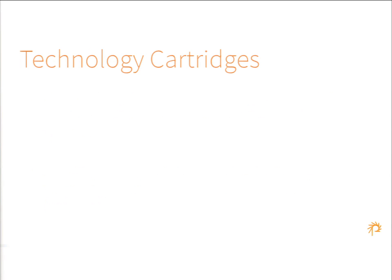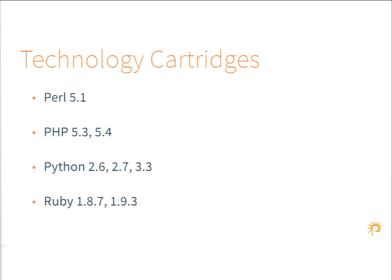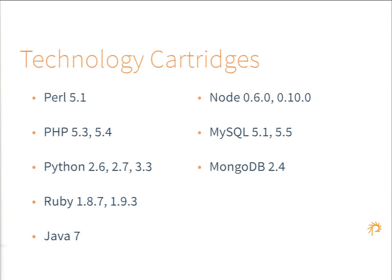We do have a small PressFlow settings helper that uses the part of PressFlow 7 which can read anything in $conf or $databases from the environment, so you don't have to edit your settings.php at all and your code will just work on OpenShift. The built-in technology cartridges come whether you're using OpenShift Online, Enterprise, or Origin. You can run Perl apps, PHP 5.3 and 5.4, Python 2.6, 2.7, or 3.3, Ruby 1.8.7 or 1.9.3, Java 7, Node 0.6 or 0.10, MySQL 5.1 or 5.5, Mongo 2.4, and Postgres 8.4 or 9.2.